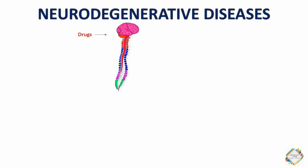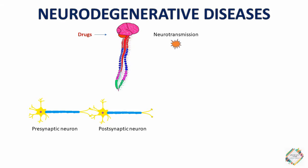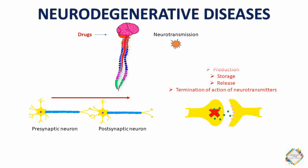Most of the drugs that affect the central nervous system act by altering some steps in the neurotransmission process. If you observe a neuron junction, there will be a post-synaptic neuron as well as a pre-synaptic neuron. The pre-synaptic neuron is before the synapse and the post-synaptic neuron is the one following the synapse. Drugs act either pre-synaptically by influencing the production, storage, release, or termination of action of neurotransmitters, or by activating or blocking the post-synaptic receptors.